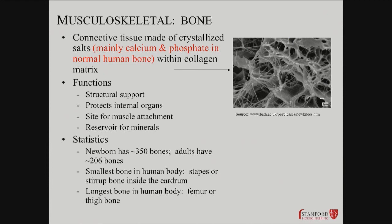So what is bone? It's a connective tissue. It's got cells, it's alive, but it's also got non-living components. It's got crystallized salts — calcium and phosphate — and those crystals are embedded within a collagen matrix. Collagen is a protein, so you've got these collagen fibrils with crystals embedded in them. It provides structure, protects internal organs, provides the site for muscle attachment, and actually serves as a calcium and phosphate reservoir that can be recruited as needed.